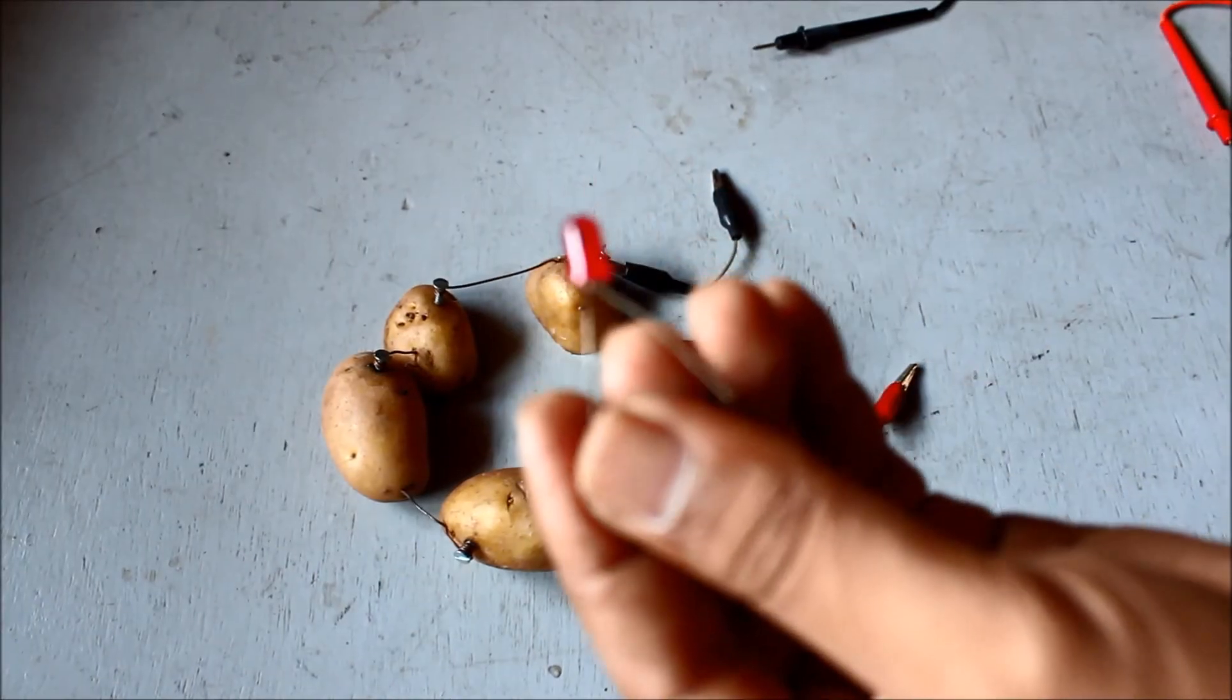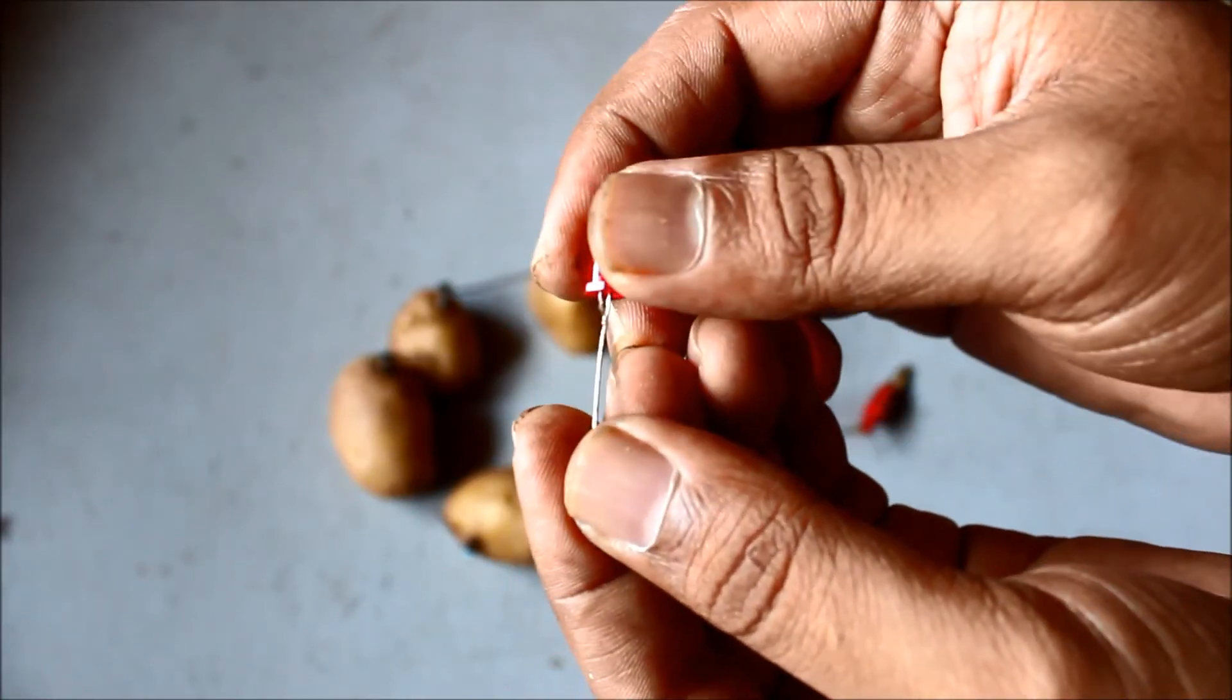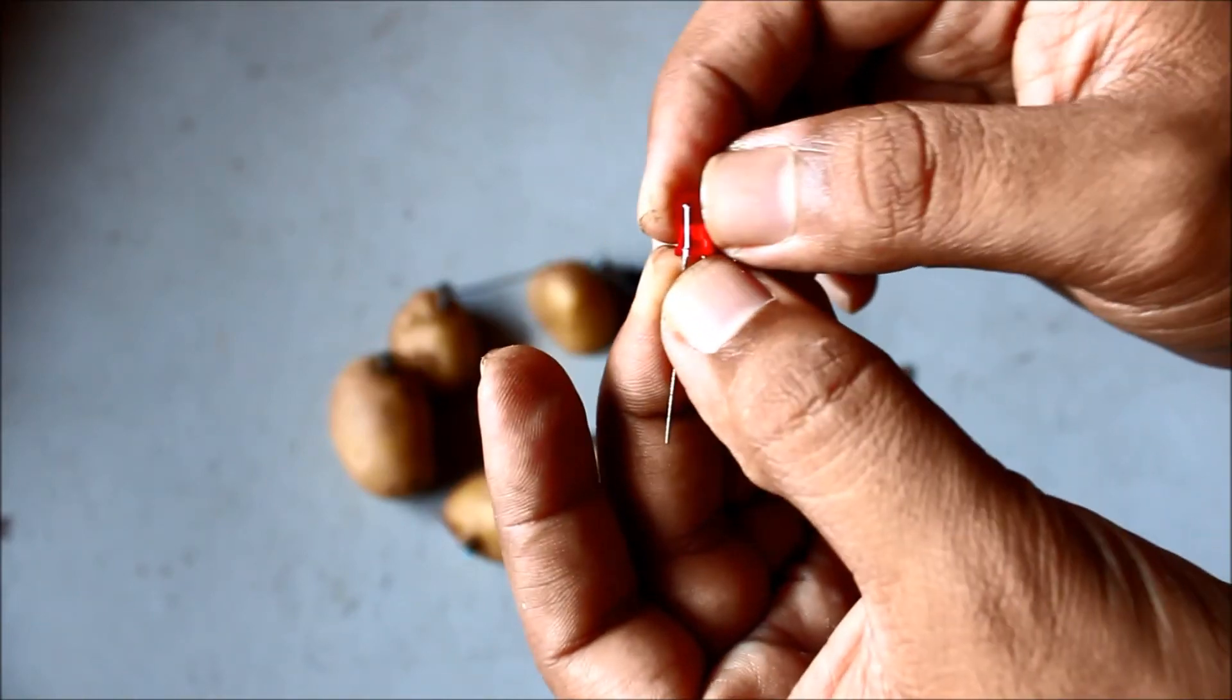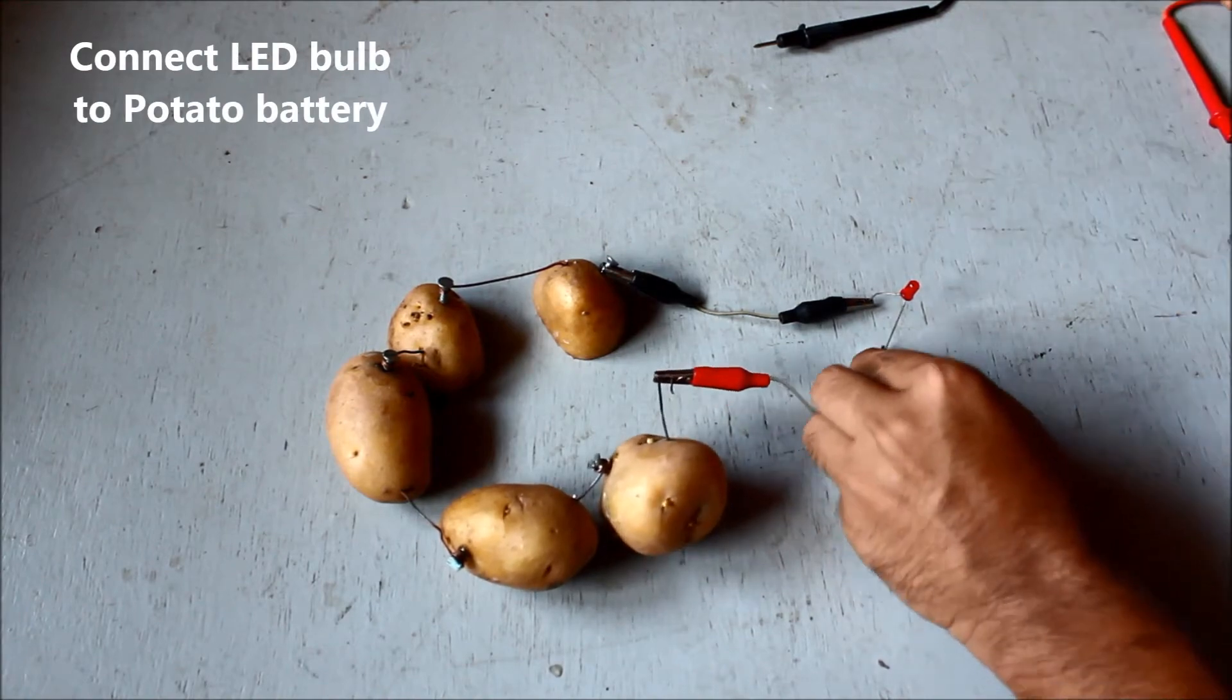This is the LED bulb that we saw earlier. We know the positive and the negative terminals, and we'll connect it with the positive and negative terminals of the battery itself, the potato battery. So let's connect. We'll connect the two terminals using jumper cables so that the voltage won't fluctuate.